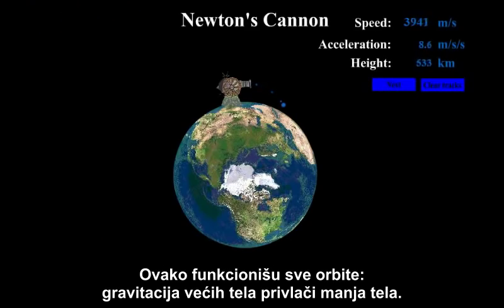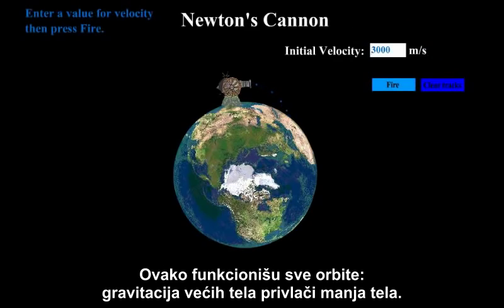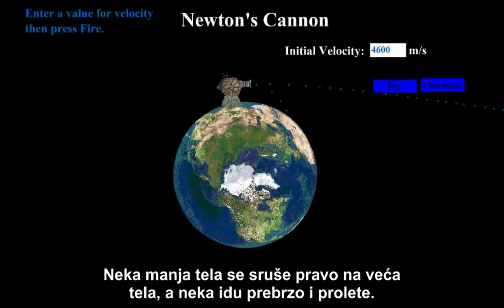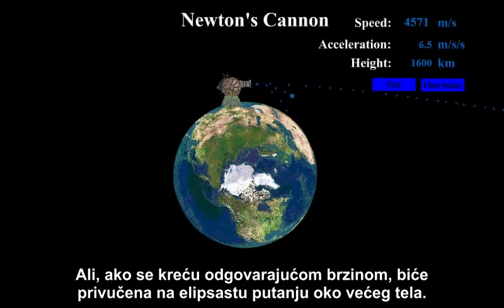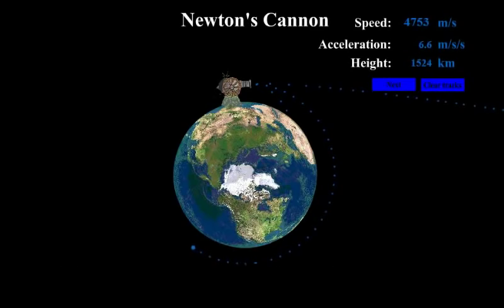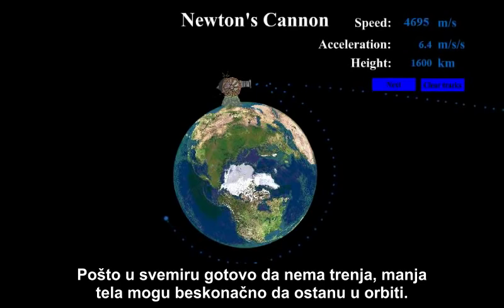Smaller objects near bigger objects are pulled in by gravity. Some will crash right into the bigger object, and some will be going too fast and fly on by. But if they are going the right speed, they will be pulled into an elliptical path around the object, but that pull is counteracted by the centrifugal force outward caused by the revolutions around the object. And because there is virtually no friction in space, objects can remain in orbit indefinitely.